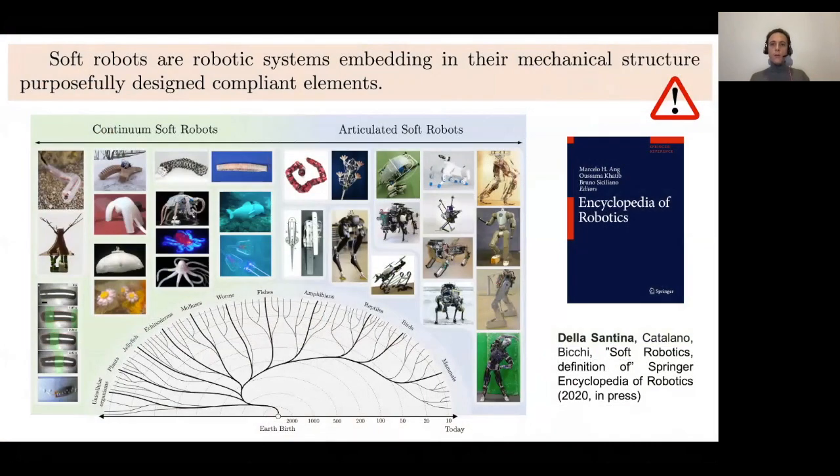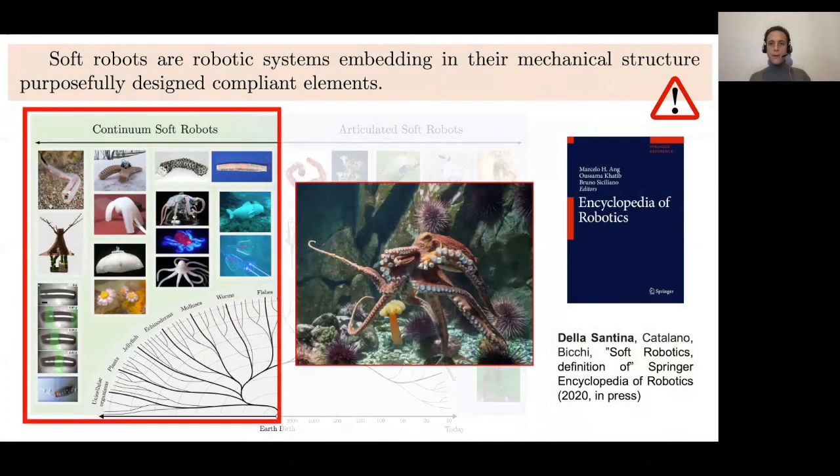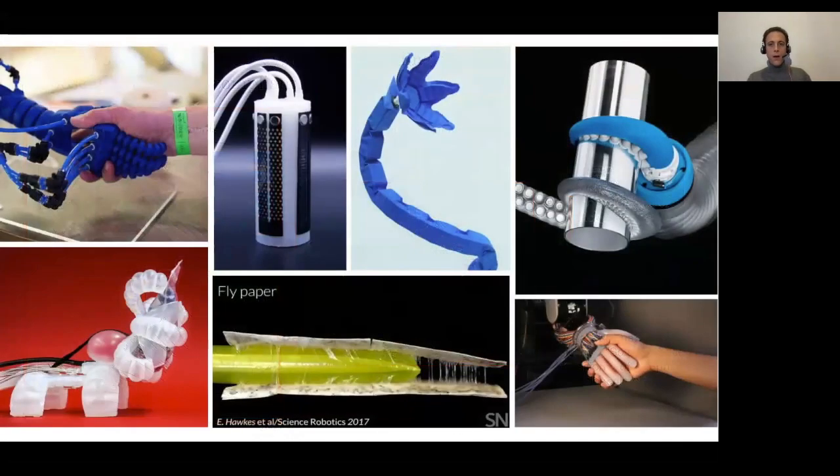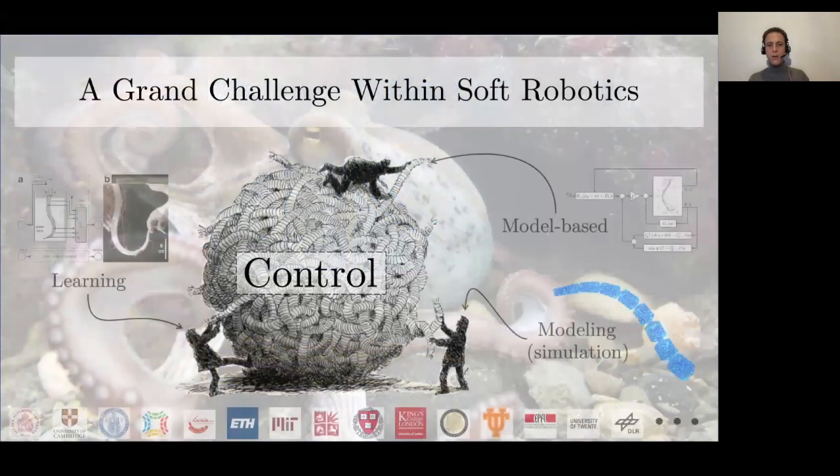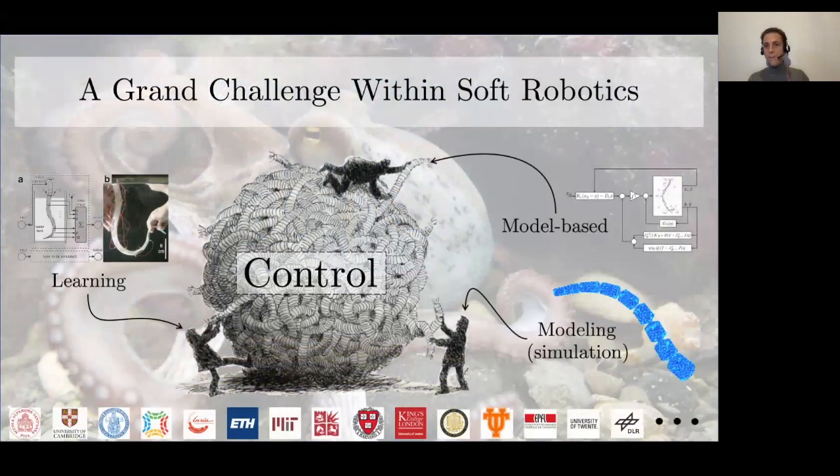Soft robots are robotic systems in which the designer purposively introduces some kind of compliance into the mechanics. Of particular interest are continuous soft robots made of continuously deformable elements to mimic octopuses or elephant trunks. A lot of very cool designs have already been proposed in the literature, but the control of these systems remains very much an open problem.